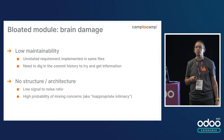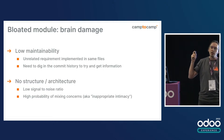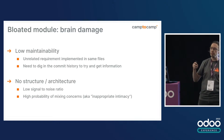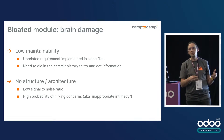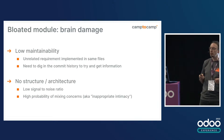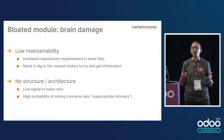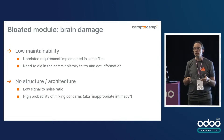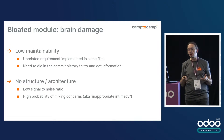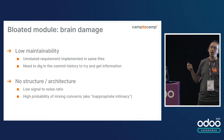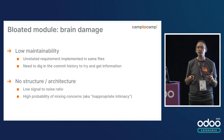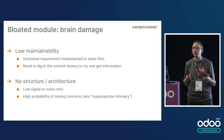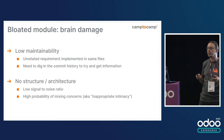This causes brain damage, obviously. That code is absolutely unmaintainable. You have unrelated requirements implemented in the same files. You need to dig in the commit history — which we were fortunate enough to get — to try to get some information about why things are done and what things are doing. There's absolutely no structure, no architecture. The signal-to-noise ratio is dreadful, and you get a high probability of mixing concerns in the source code. That's also known as inappropriate intimacy in the code smells and anti-patterns literature.